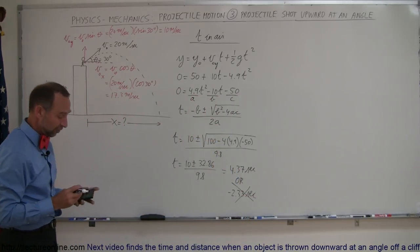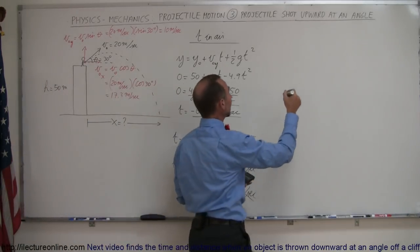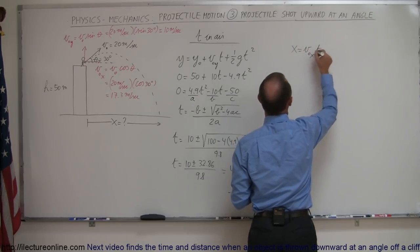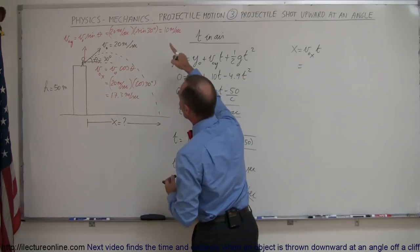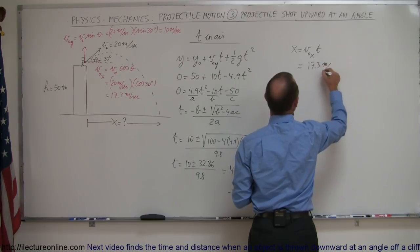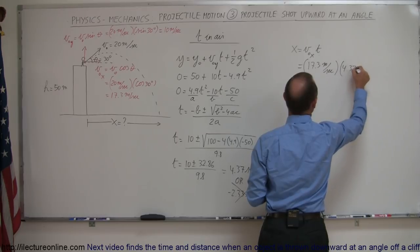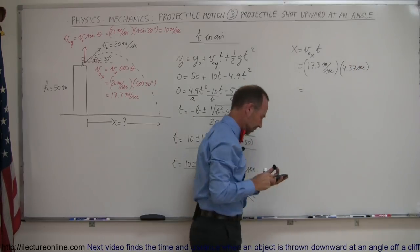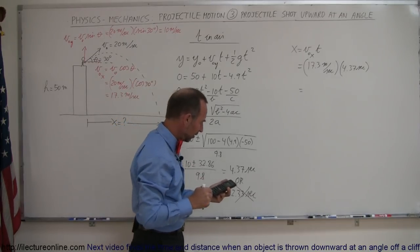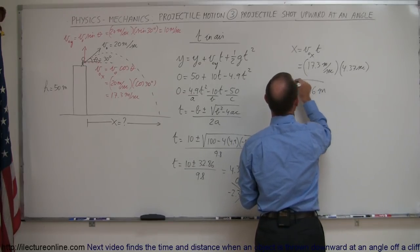Now we have time in the air. So for the second part of the problem, we're going to find out how far it traveled. So we know now that in the x direction, we have x is equal to v initial in the x direction times time. The v initial in the x direction is known right here, which is 17.3 meters per second. We multiply that times the answer we got here, 4.37 seconds, and 17.3 times 4.37 equals 75.6 or 76 meters in the x direction.